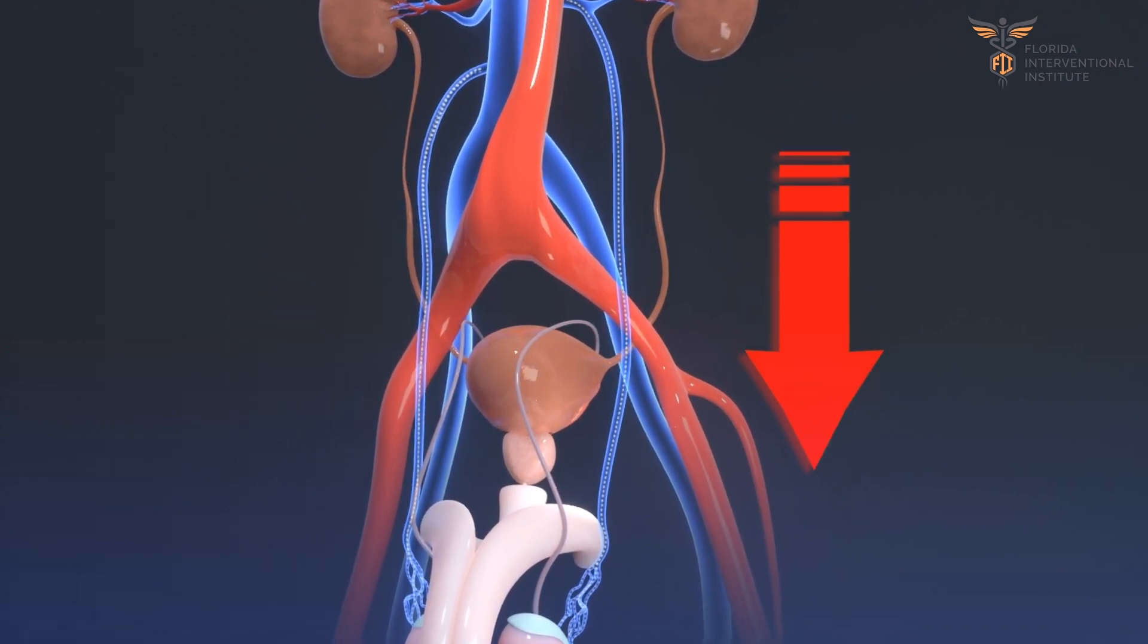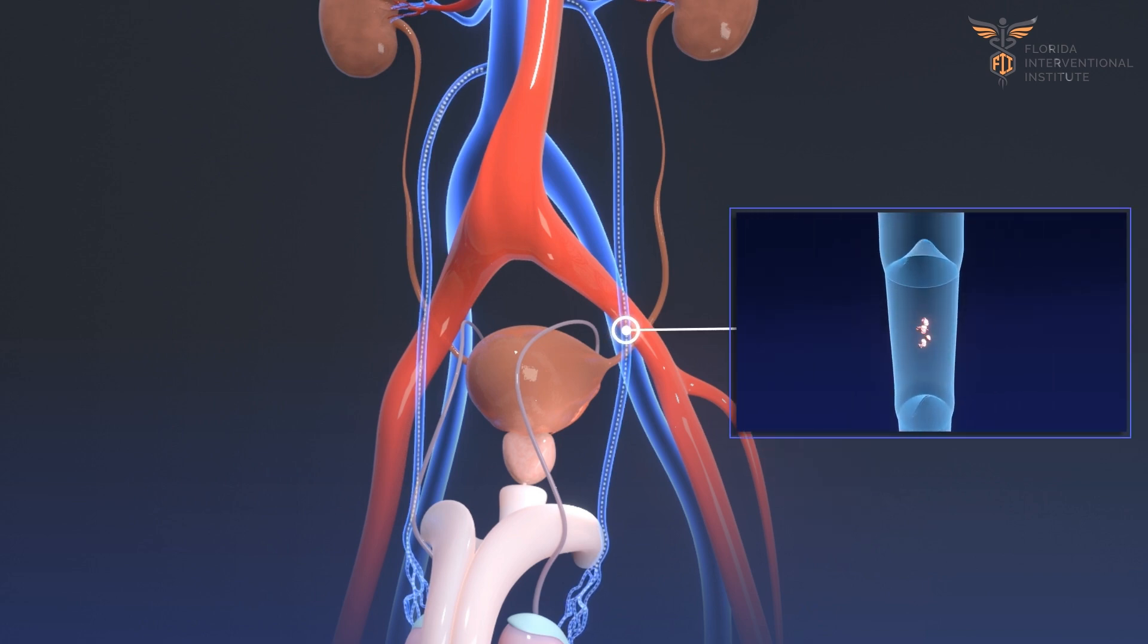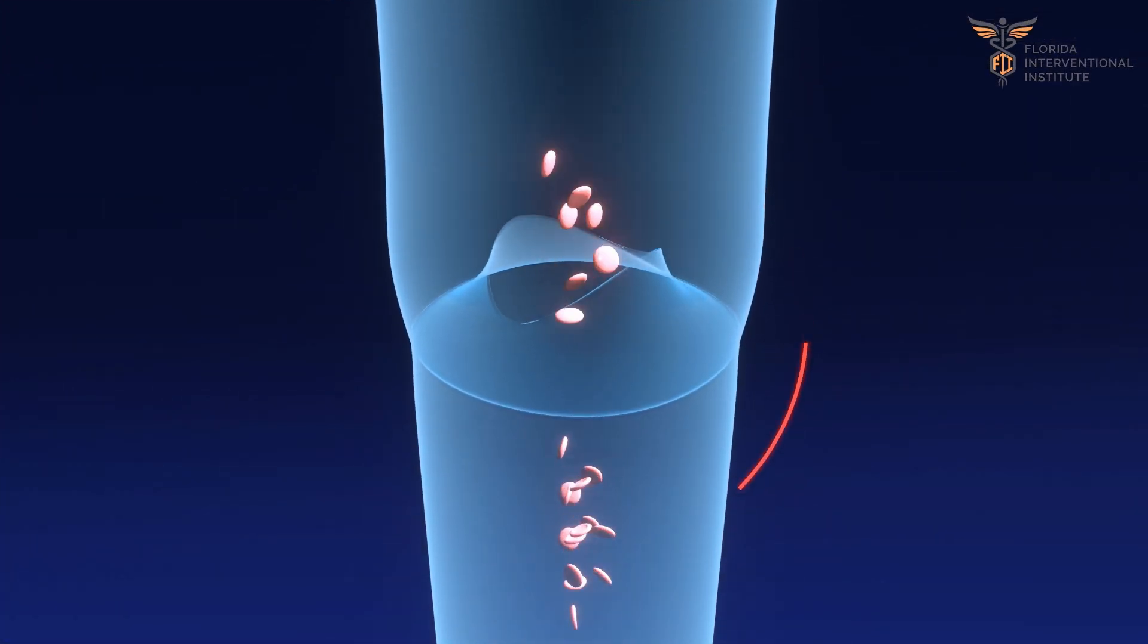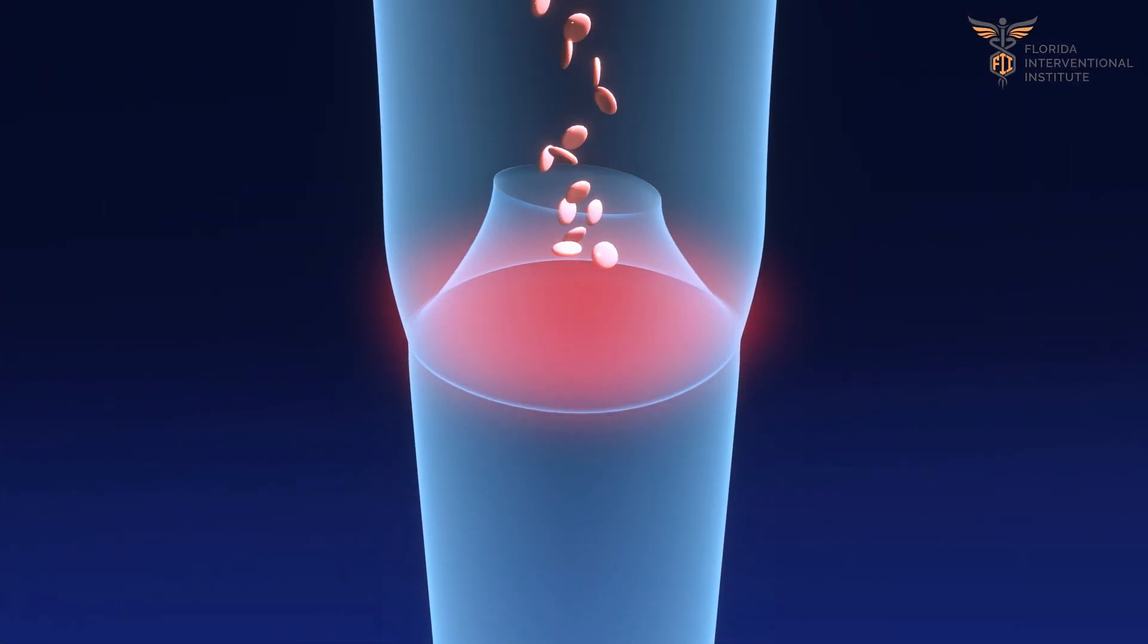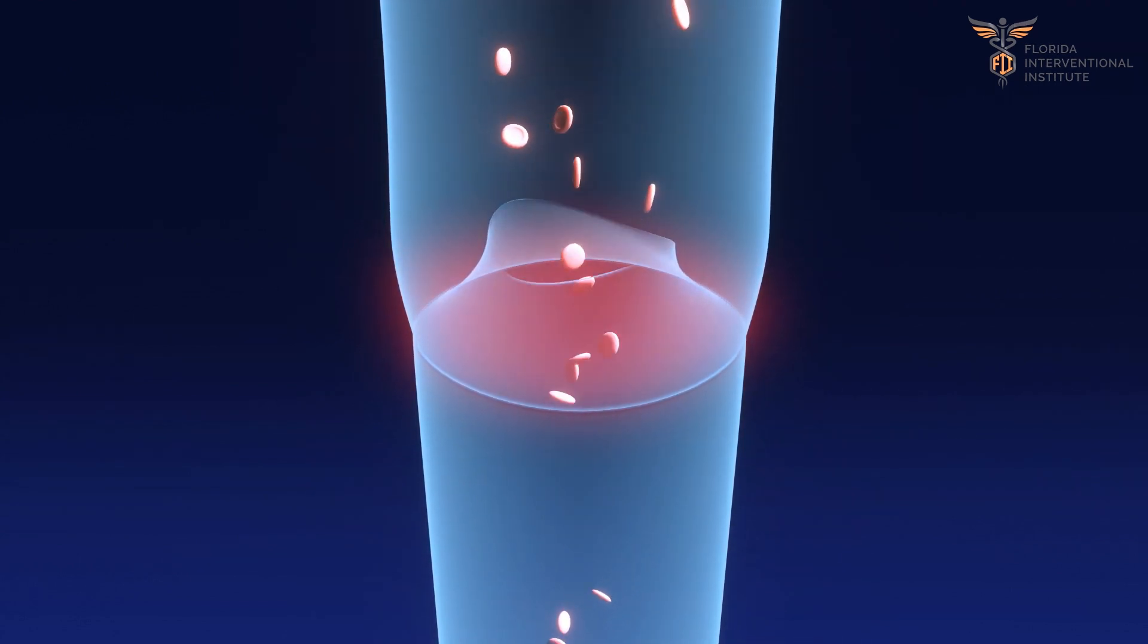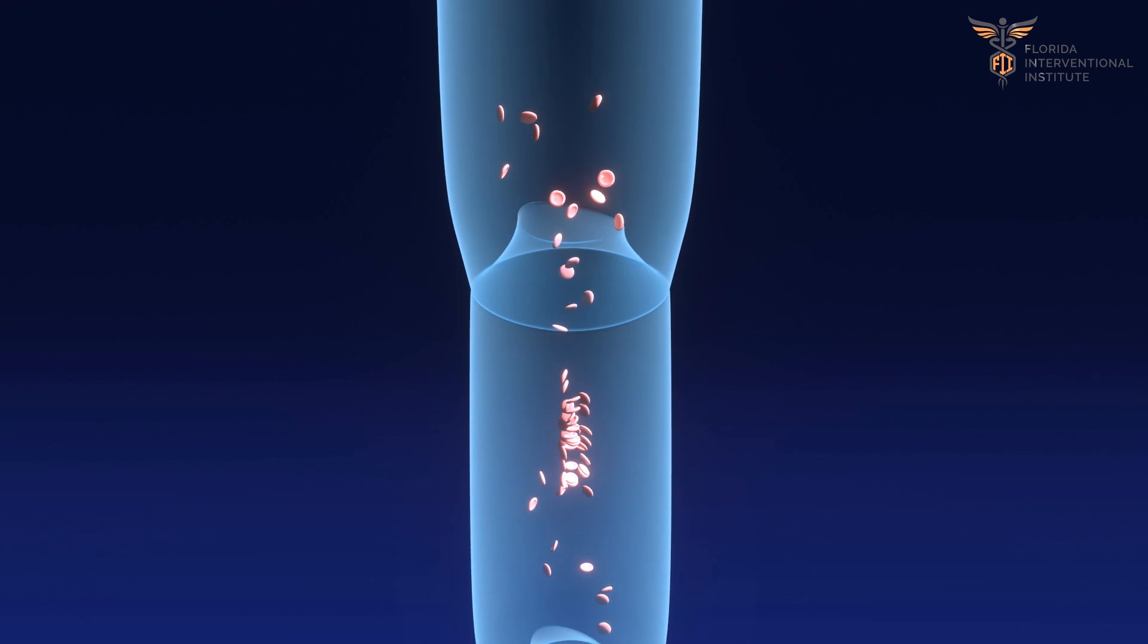When they are defective, blood flows down towards the testicles with gravity. Normal gonadal veins have valves which prevent the backflow of blood towards the testicles. In some cases, the valves become defective and this allows blood to flow in the reverse direction towards the testicles.